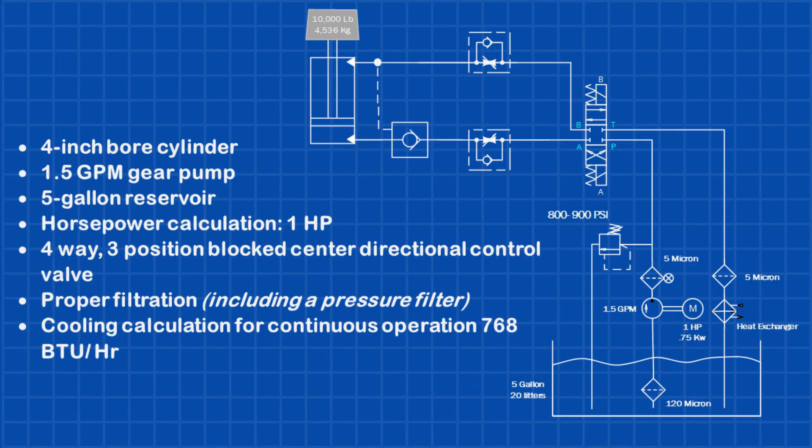And here you have it. We've successfully designed a basic hydraulic system to lift a 10,000 pounds weight. Here's a quick summary of what we've covered. A 4-inch bore cylinder. A 1.5 GPM gear pump. A 5-gallon reservoir. 1 horsepower for motor calculation. A 4-way, 3-position, blocked center directional control valve. Proper filtration, including a pressure filter. Cooling calculation for continuous operation, with a requirement of 768 BTU per hour.